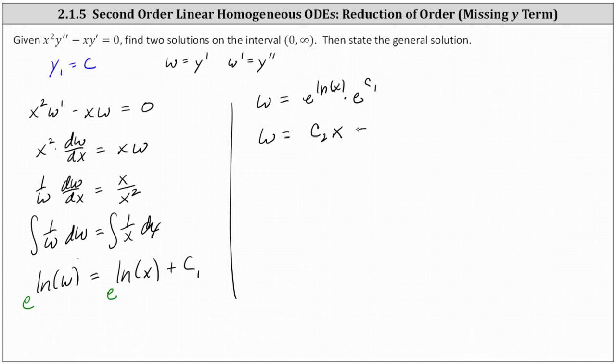And remember w is equal to y prime, which means y is equal to the integral of c sub two x dx, giving us y equals c sub two times x squared divided by two plus c sub three.